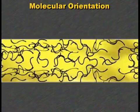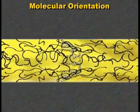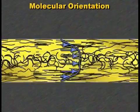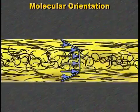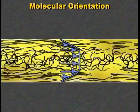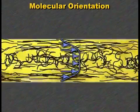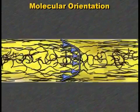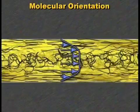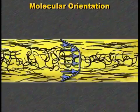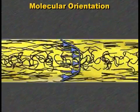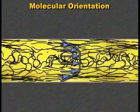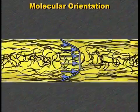Now we'll show flow of all the molecules. Notice that molecules only orient where there is a difference in the flow speed. When two adjacent molecules flow at different speeds, there is a shearing between them. This is what causes them to orient. In the center of the flow stream, the molecules are flowing fast, but there is no difference in the speed of the neighboring molecules, so there is no orientation.